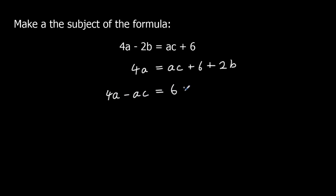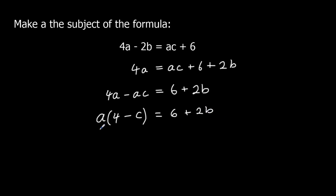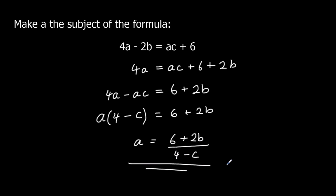Then take away ac from both sides: 4a minus ac equals 6 plus 2b. So I've got my a's on the same side. I'm going to factorize 'a' out: 'a' outside the bracket, 4a gives 4, ac gives c, so 'a' times (4 minus c) inside the bracket equals 6 plus 2b. To get rid of the times, divide both sides by (4 minus c), so a equals (6 plus 2b) all over (4 minus c).